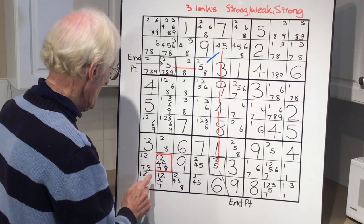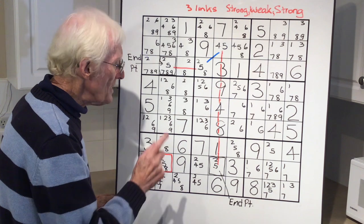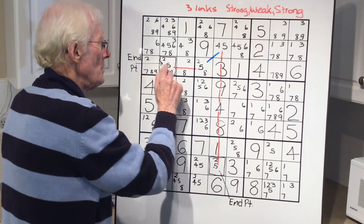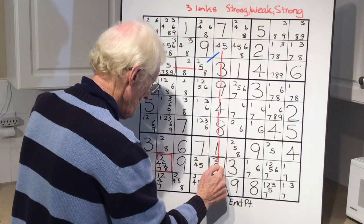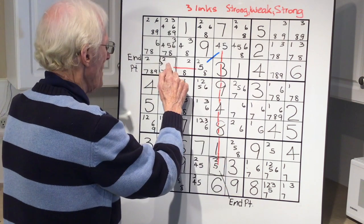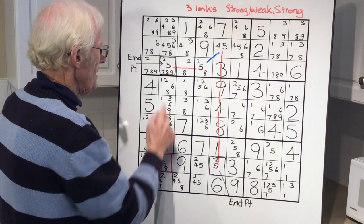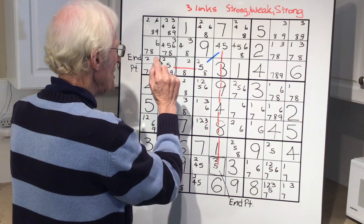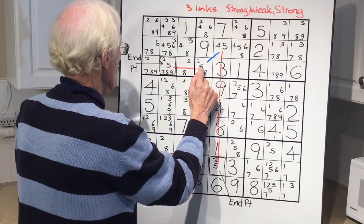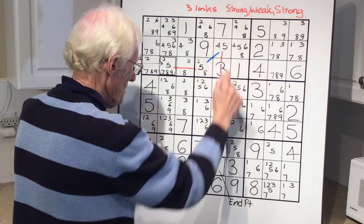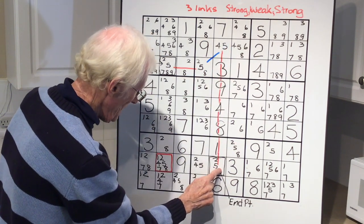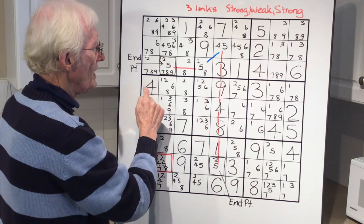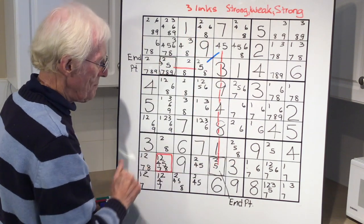Now, interestingly enough, let me just demonstrate that. If this was true, false, true, false, that means that that five means that you can't have a five there. Now let's go this way. If this was false, that would be a five, that would be true, that would be false, false, and that would be true. If that was true, a real five, that means it still can't be a five. It doesn't matter whether that becomes a five, or that becomes a five using the links, that five can be removed.